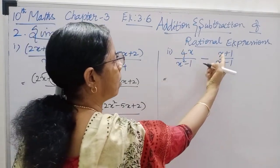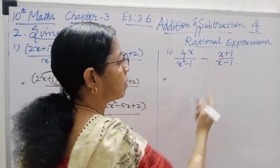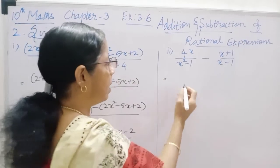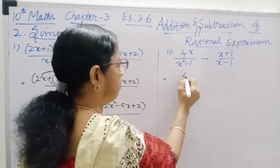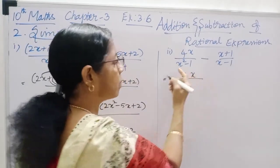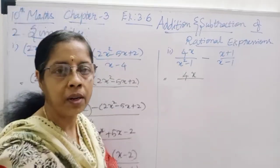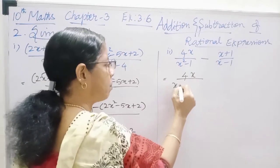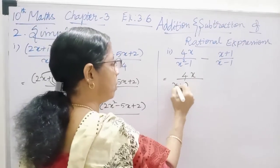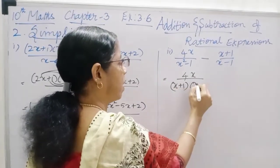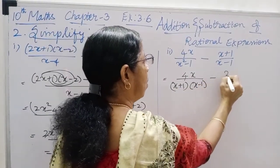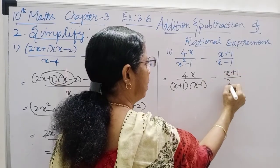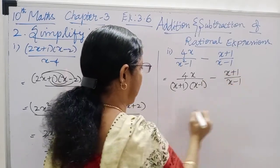Now let's look at: 4x divided by x squared minus 1, minus of x plus 1 divided by x minus 1. Here, 4x by x squared minus 1, where x squared minus 1 is x plus 1 into x minus 1, minus of x plus 1 by x minus 1.